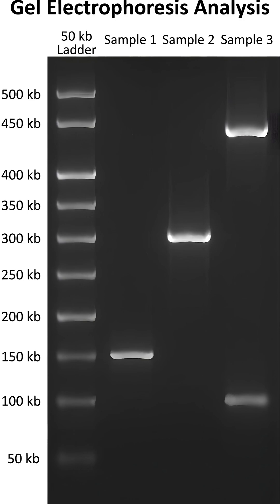After the scientist prepared the agar gel, they would turn on the electricity. The negative DNA would migrate to the positive electrode. The small DNA would migrate much faster than the larger DNA, so all the small DNA particles migrated together towards the top, whereas the larger stayed at the bottom.